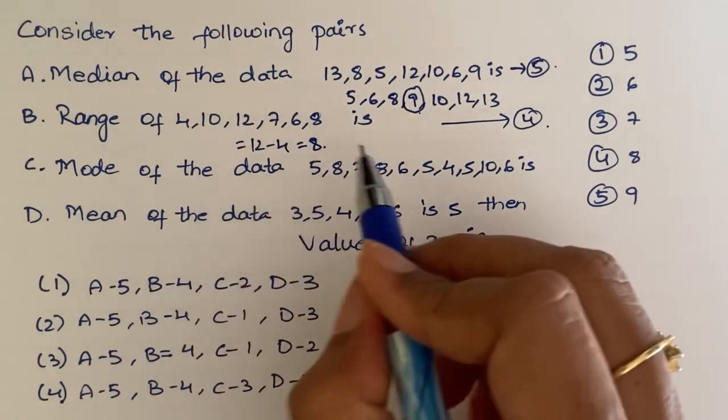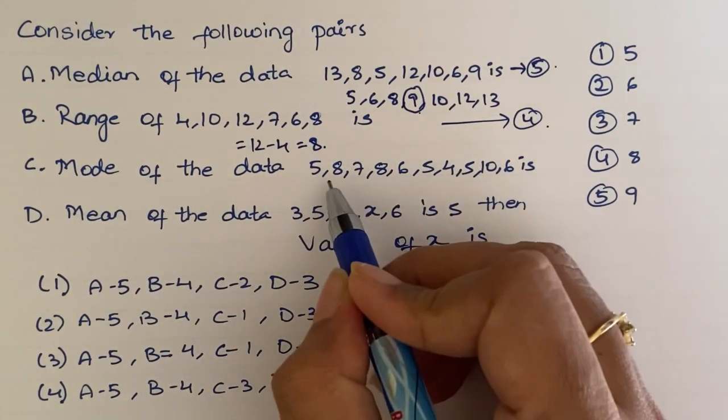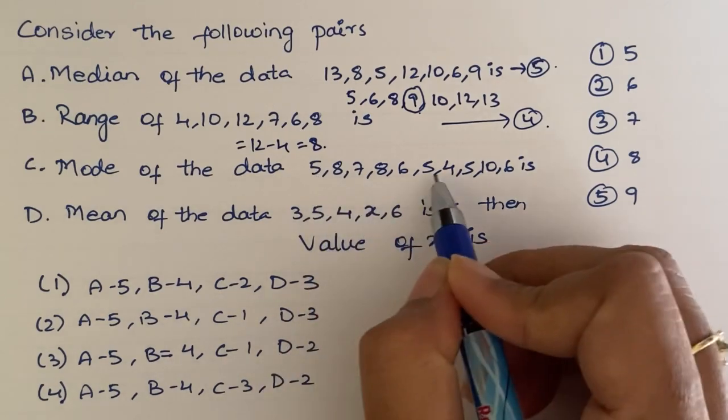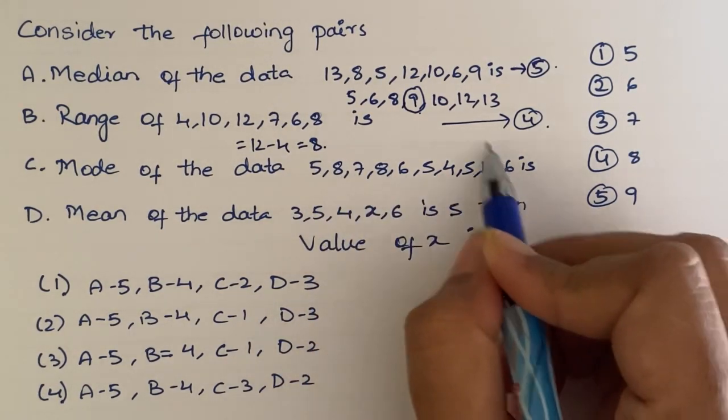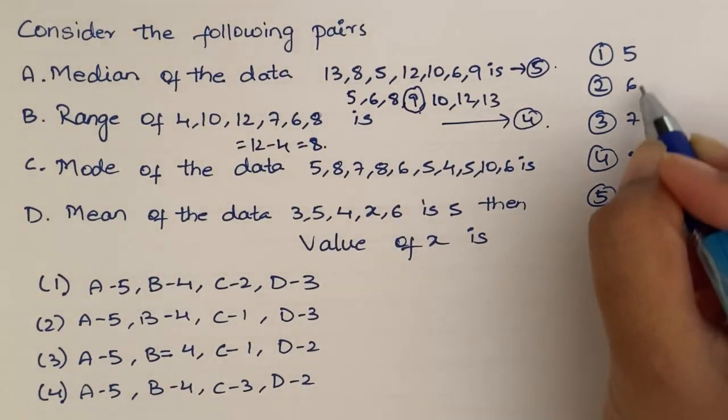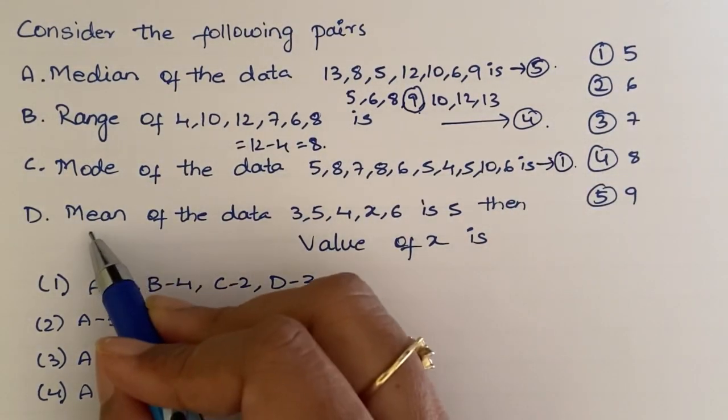Next. Mode of the data. Mode means which number repeats the most. Here we see 5 one time, 5 two times, 5 three times. 8 appears only 2 times. So, the mode is 5. 5 is here in first option. So, first one.